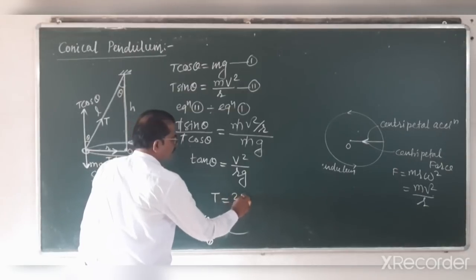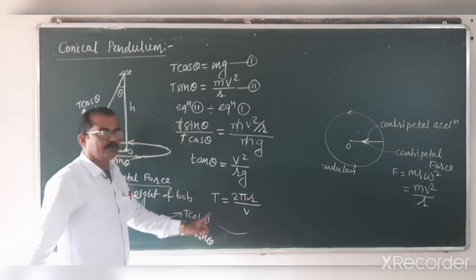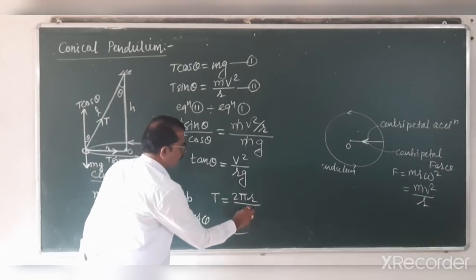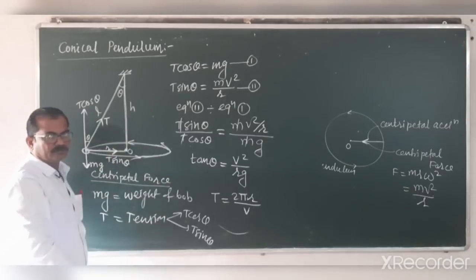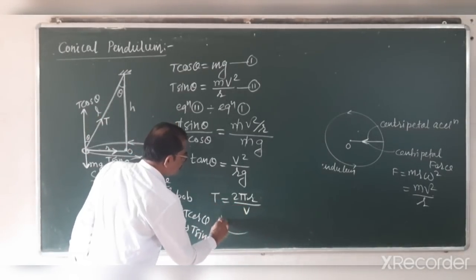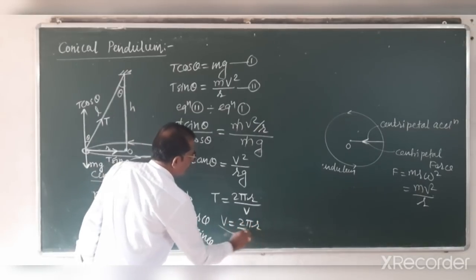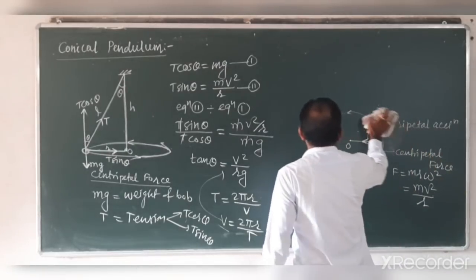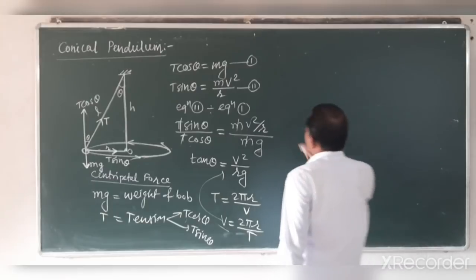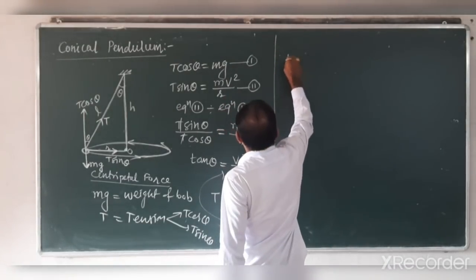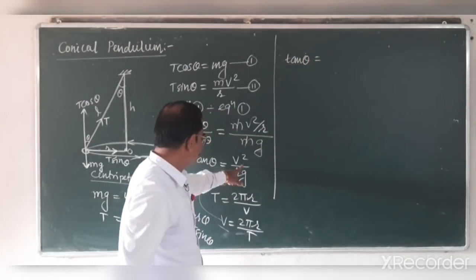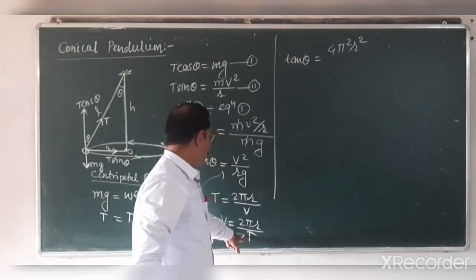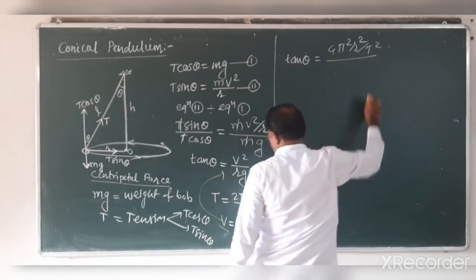We know that the time period T equals 2 pi R by v, where 2 pi R is the circumference of the circular path and v is the speed of the bob revolving in the horizontal circle. From this, v equals 2 pi R upon T. Substituting this value of v into the equation, v squared becomes 4 pi squared R squared upon T squared.